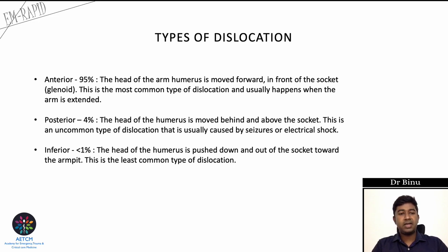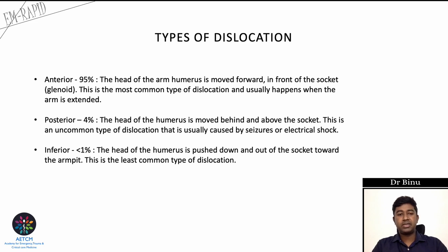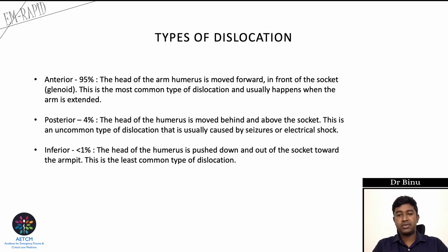Anterior dislocation usually occurs when the arm is extended. Posterior dislocation accounts for about 2 to 4% of cases, where the humeral head moves behind and above the socket, typically caused by seizures or electric shock. The least common is inferior dislocation, where the humeral head is pushed down and out of the socket toward the armpit.